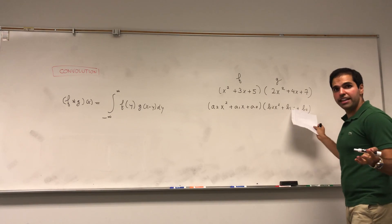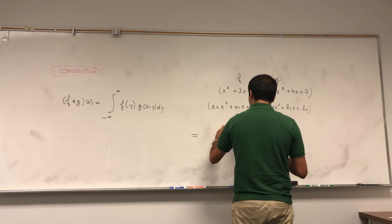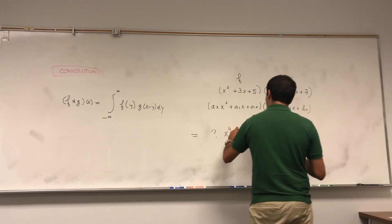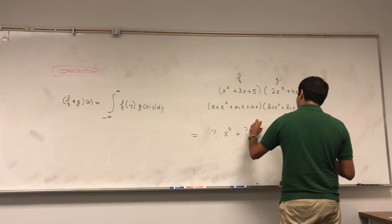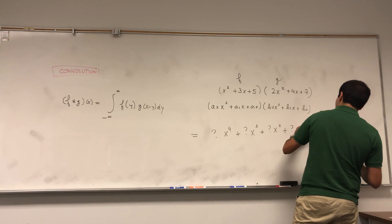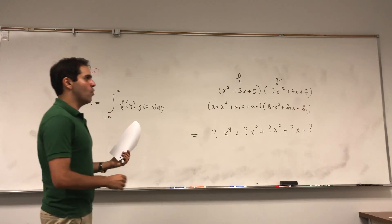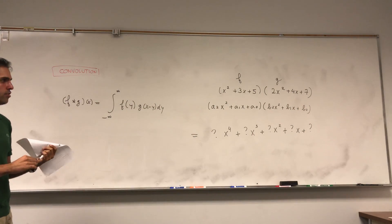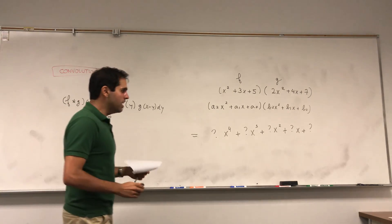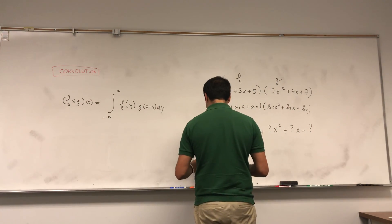If you foil it out, you get a polynomial I think of degree 4, so something x⁴ plus something else x³ plus something else x² plus something else x plus a constant term. And here's my question: again, you're multiplying those two functions, what is, let's say, the coefficient of x² in this expansion?